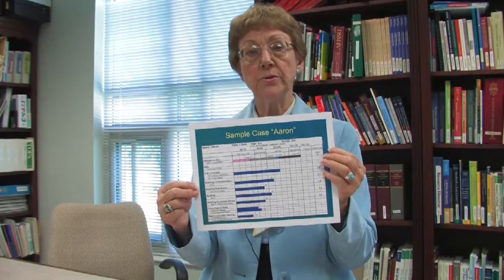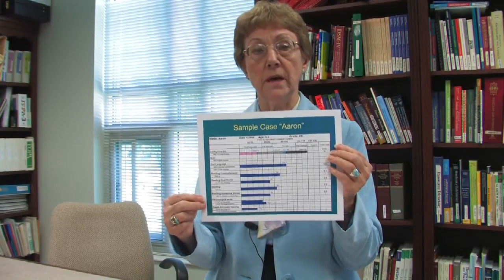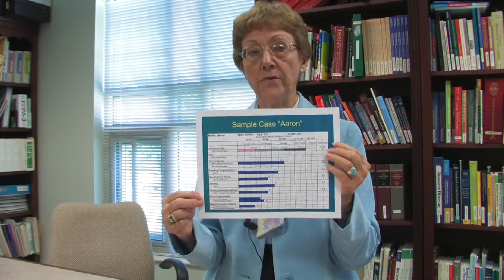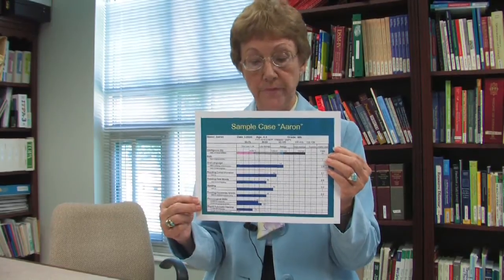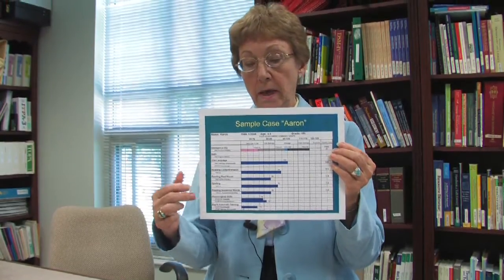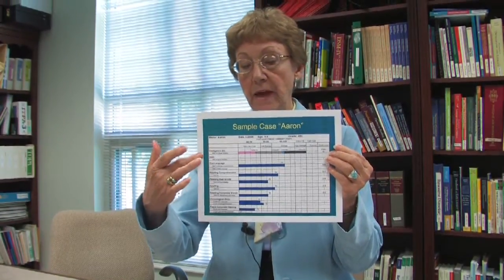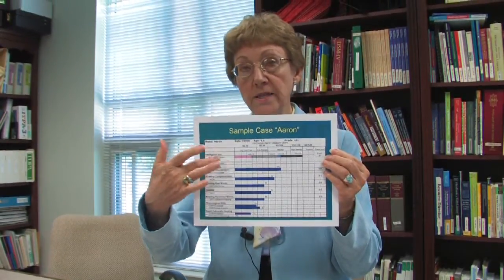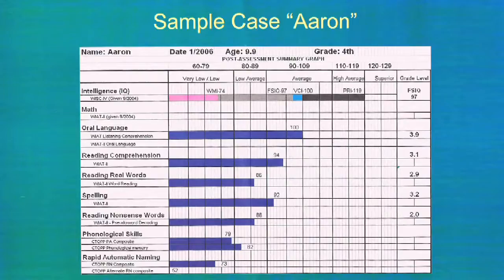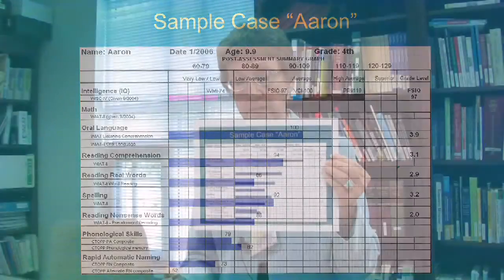This is a graph that shows the testing that was done on a fourth grade boy named Aaron. You can see the kinds of tests that were given and the profile of his test performance, which help us to make the diagnosis of dyslexia.